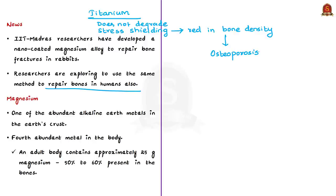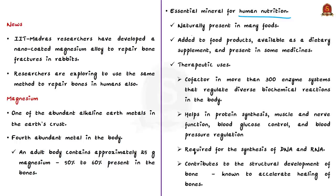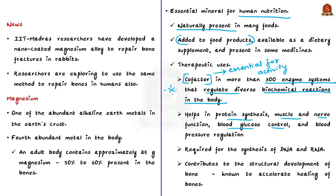Stress shielding refers to reduction in bone density because of removal of typical stress from the bone by an implant. This leads to bone diseases such as osteoporosis which cause bones to become weak. Let us know a few information about magnesium. It is one of the abundant alkaline earth metals in earth's crust. With respect to human body, it is the fourth abundant metal. An adult body contains approximately 25 grams magnesium, of which 50% to 60% are present in bones. It is an essential mineral for human nutrition, naturally present in many foods, and also added to food products as a dietary supplement and present in some medicines.